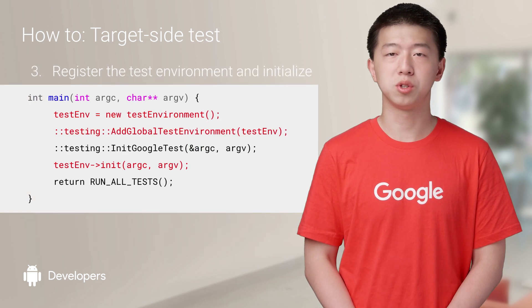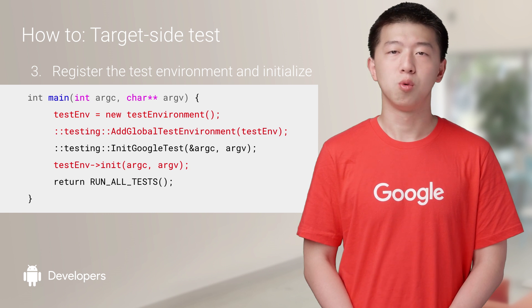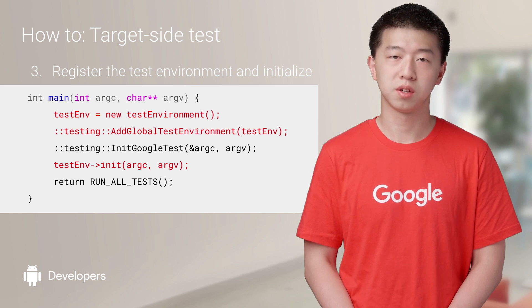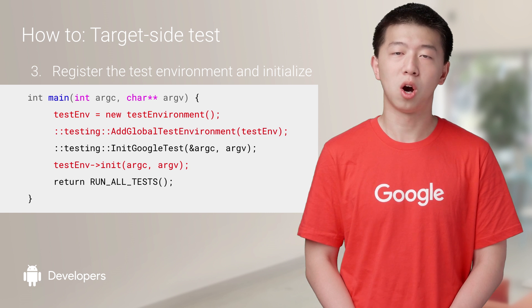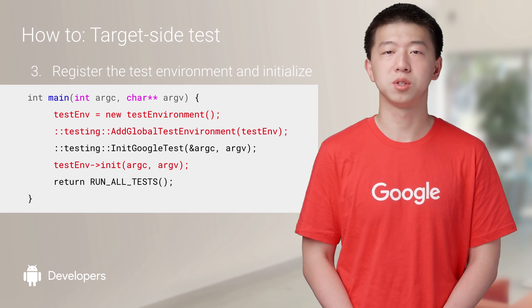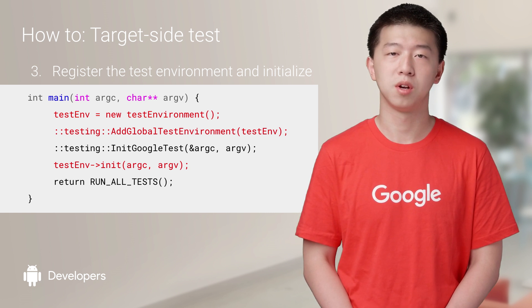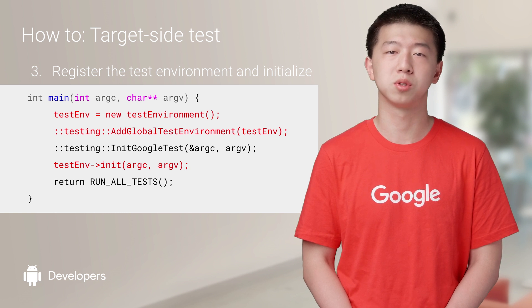The final thing we need to change is the main function, where we need to add the test environment defined previously and, more importantly, call the emit method which will pass the service name for each test in each HAL we get from the VTS test framework to the test.